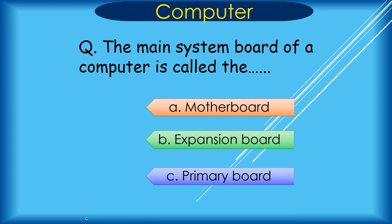The main circuit board of a computer is called A. Motherboard, B. Expansion Board, C. Primary Board. Correct answer is A. Motherboard.